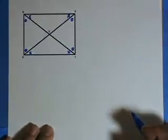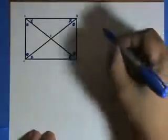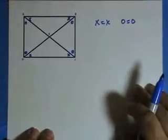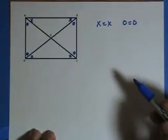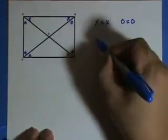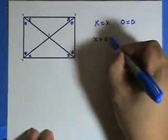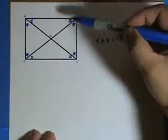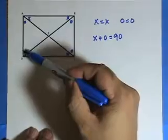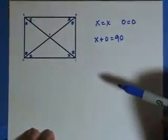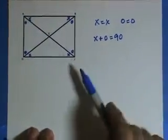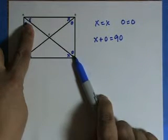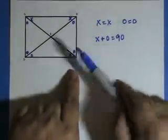Now I'm going to find another set and I'm going to put circles in those. So all four of those angles are congruent. So x equals x and circles equals circles. Now, additional information is that the x's and o's add up to 90. So these two add up to 90, these two add up to 90, these two add up to 90, and those two add up to 90.